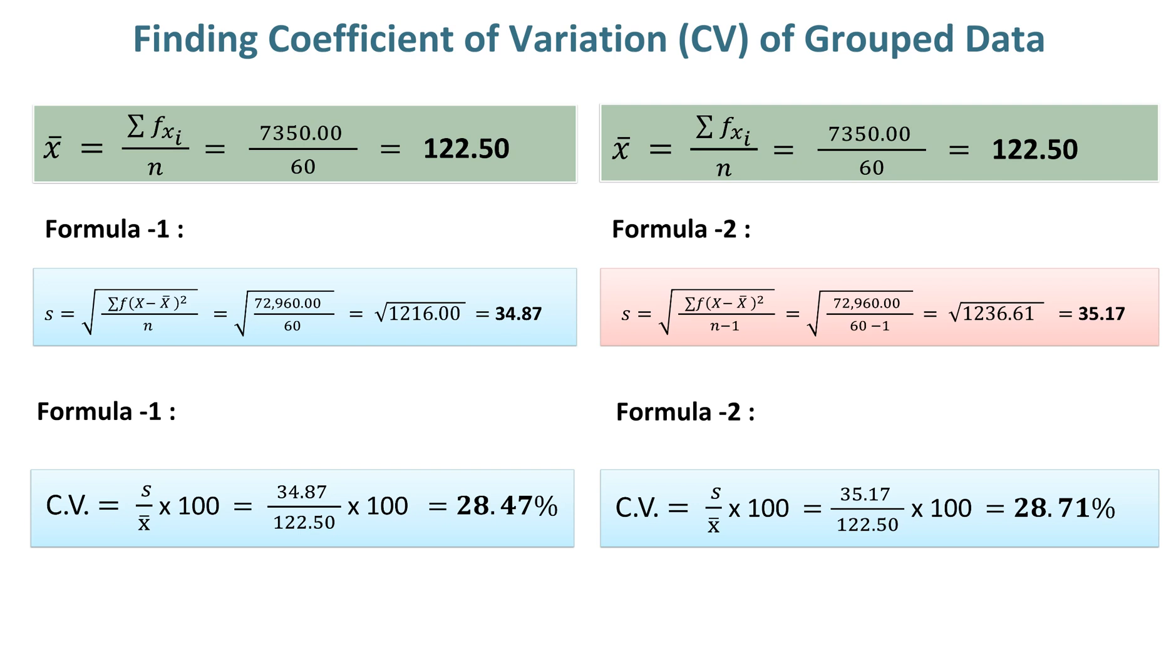Thus, the coefficient of variation in this example using Formula 1 is 28.47%. The coefficient of variation in Formula 2 is slightly higher at 28.71% because of subtracting 1 from sample size in standard deviation Formula 2.